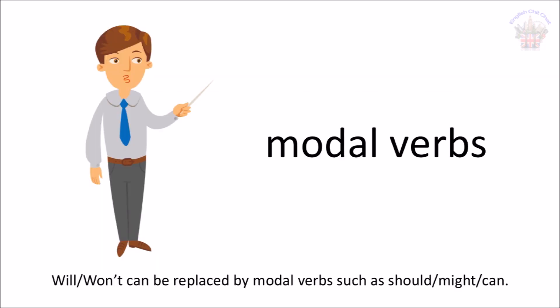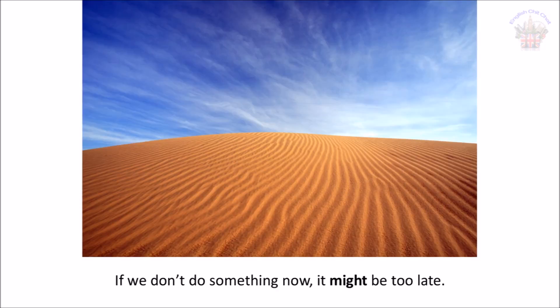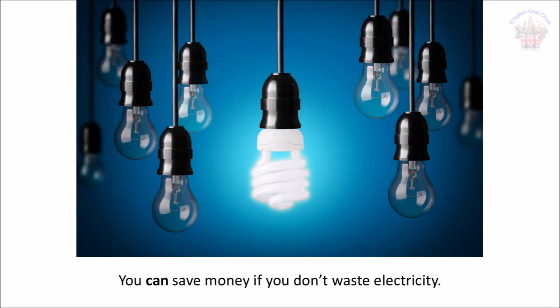'Will' and 'won't' can be replaced by modal verbs such as 'should,' 'might,' and 'can.' For example: 'If you want to help the environment, you should recycle.' 'If we don't do something now, it might be too late.' 'You can save money if you don't waste electricity.'